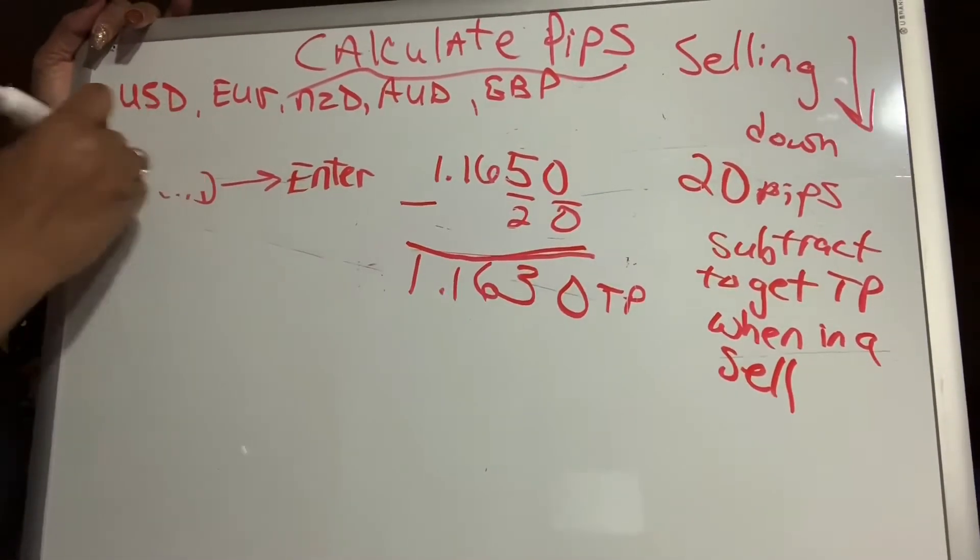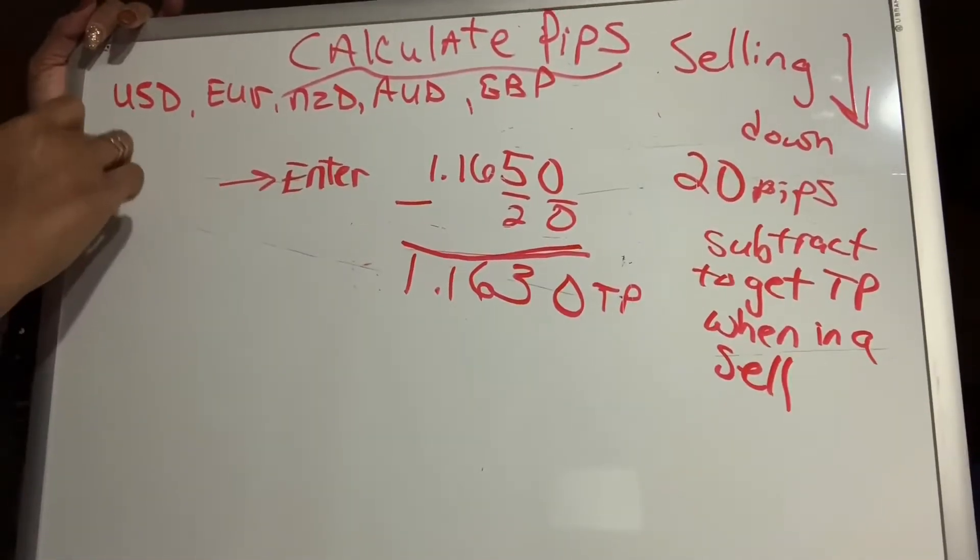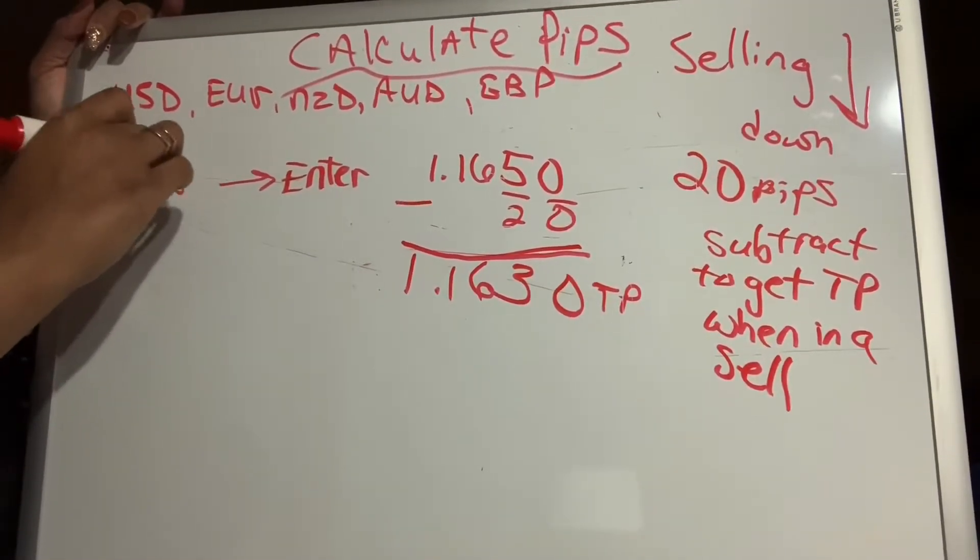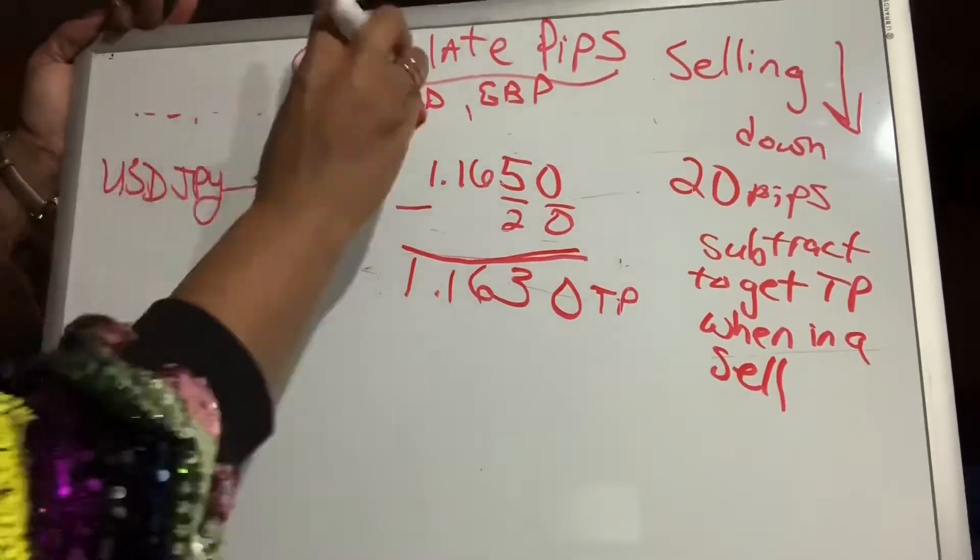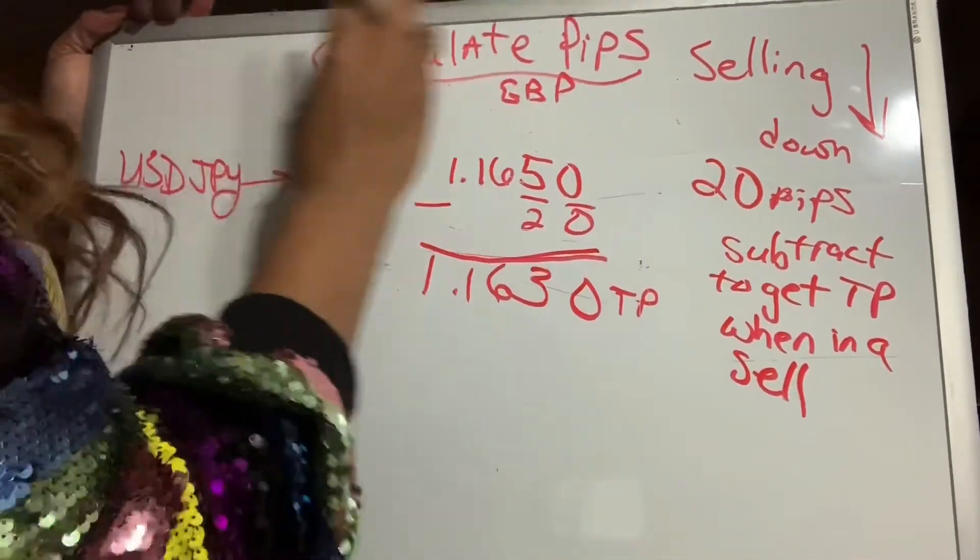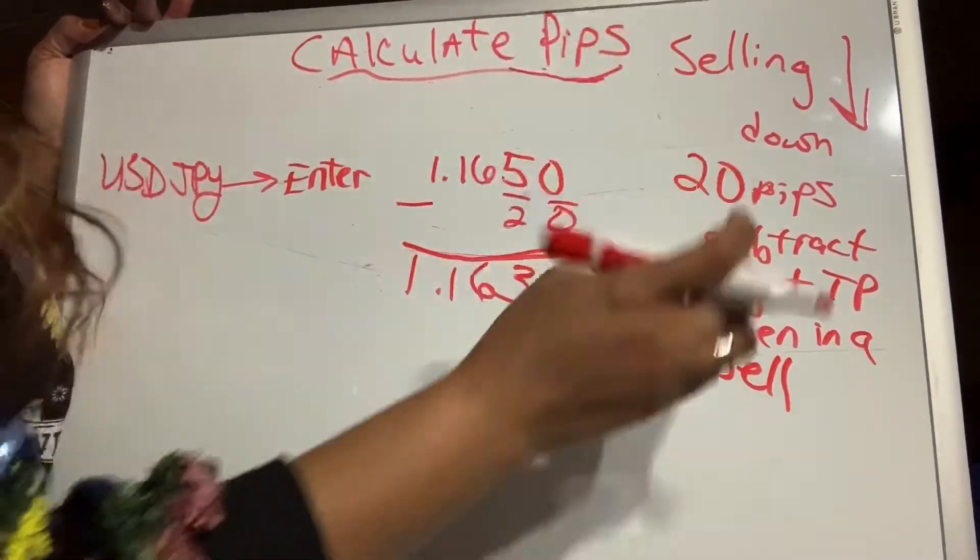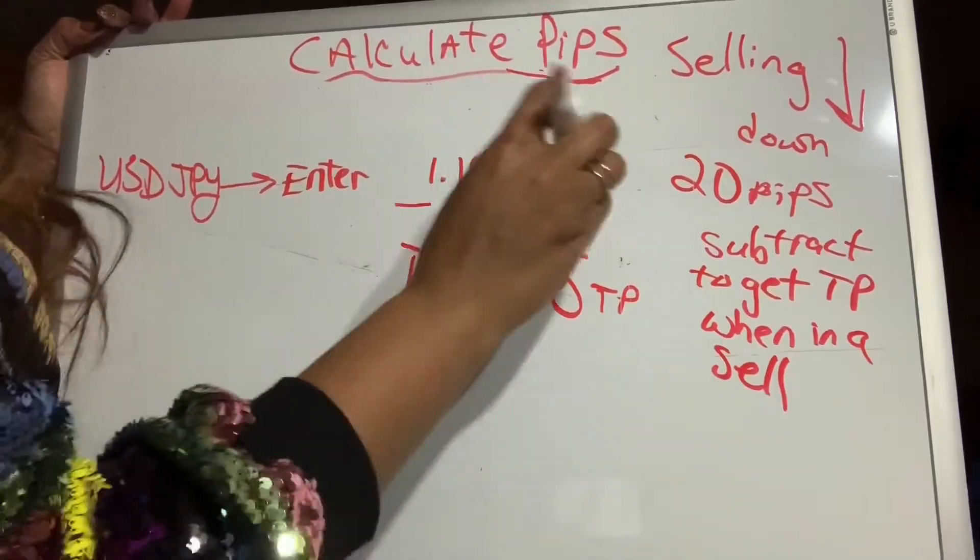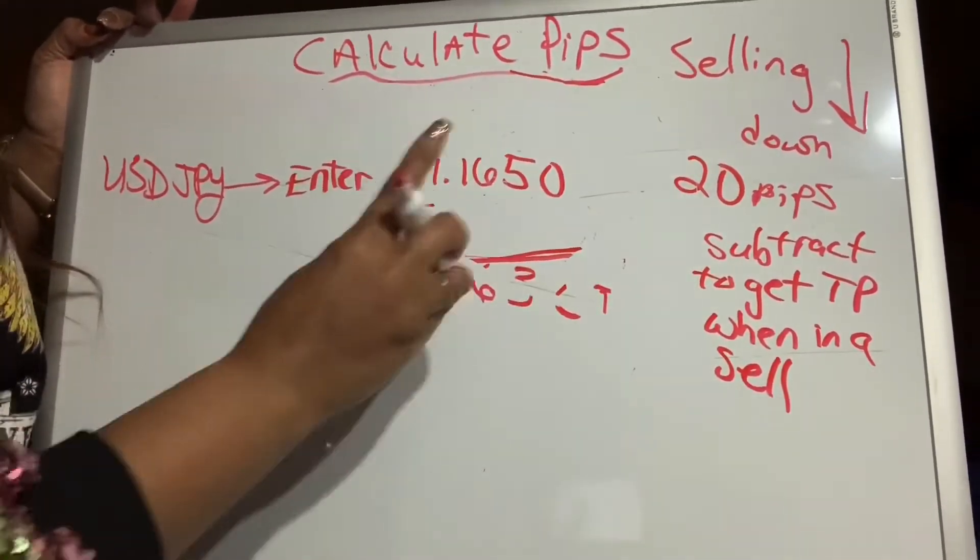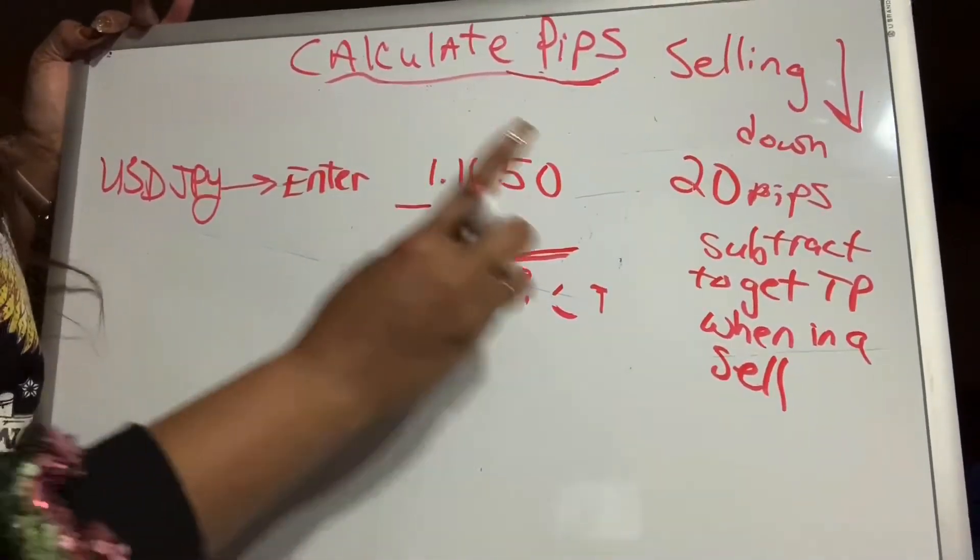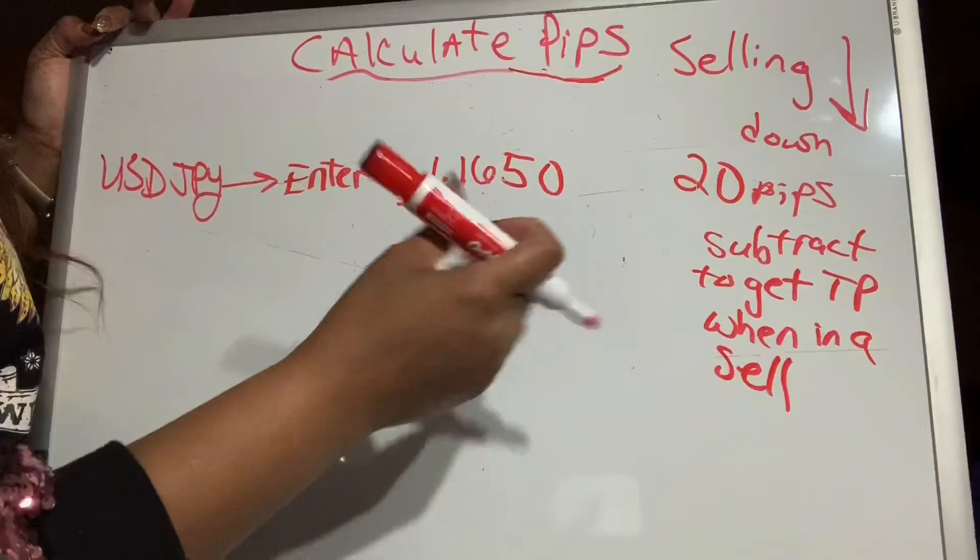Let's trade something else. Let's say it's a JPY pair. This is where you change it up. USDJPY. Whenever you're trading the JPY pair, you are going to add and subtract to the first and second number after the decimal. You're going to add and subtract to the first and second number after the decimal on a JPY pair.